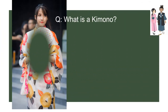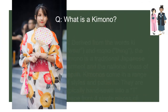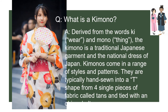The kimono is a traditional Japanese garment and the national dress of Japan. It is a flat T-shaped garment with square sleeves and a rectangular body, worn left over right unless the wearer is deceased. It is always worn with an obi, or a belt.